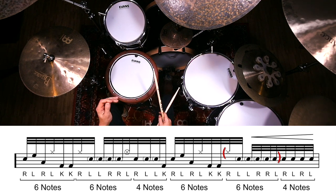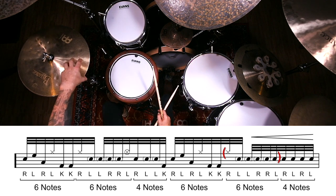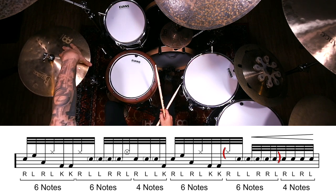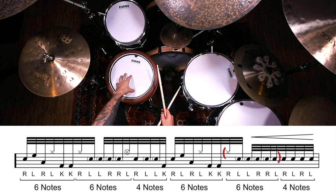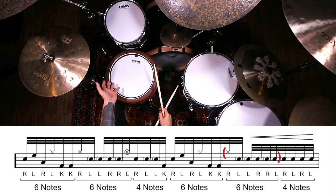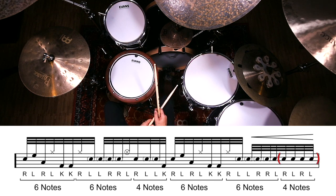Except that last left hand is not going up to a splash or an open hi-hat like it was the first time we played a six-stroke roll. In this one, the later six-stroke roll, we're just taking that left hand and letting it bleed into the last four notes, which is just single stroke.